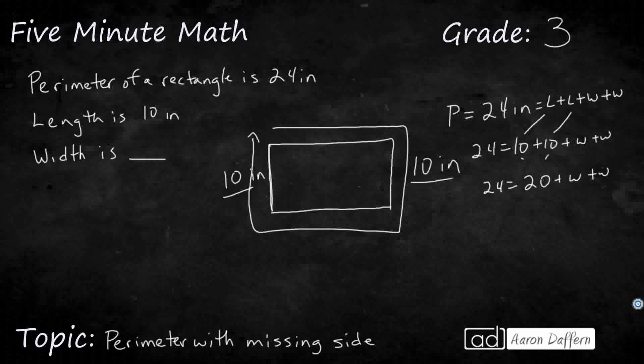So 20 plus this has got to make 24. Well, this right here, that's got to be 4, right? Because 20 plus 4 make 24. But that doesn't mean that my width is 4. No, because remember, the width plus the width make 4. So I've got to cut that in half.